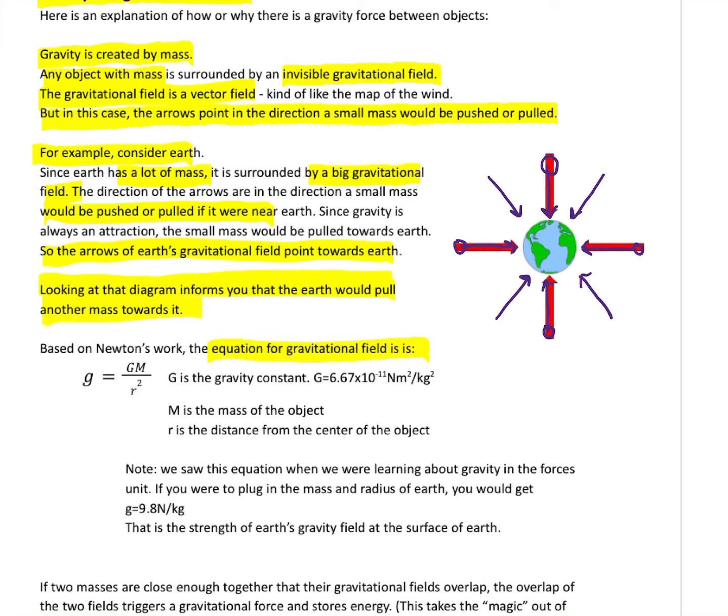I'm not going to do a real derivation of the equation, but basically what we saw when we did our forces unit is the equation for the gravitational field we saw before is g = GM/r². G is the gravitational constant, M is the mass of the object, so in our diagram the mass of the Earth.